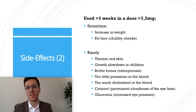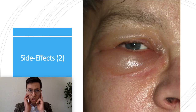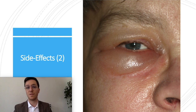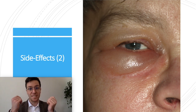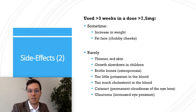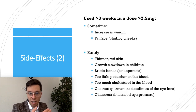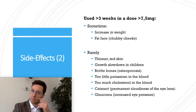If you use prednisone for more than three weeks at a dose higher than 7.5mg per day, you can sometimes get an increase in weight and a fat face — chubby cheeks — because of fluids (edema) getting into your cheeks. Rarely we see the side effects of thicker red skin. In children they might grow a little bit slower, and brittle bones or osteoporosis may occur. You may have too little potassium or too much cholesterol in your blood. After all, you may get cataract, which is a permanent cloudiness of your eyelids, and glaucoma, which is increased eye pressure causing pain in your eye.